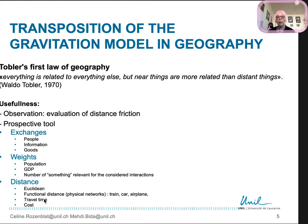Distance can be Euclidean, but it is often the functional distance by the physical networks: by train, car, airplane. More practical studies also consider travel time or cost of distance, which could also be a psychological cost in terms of transactional cost.